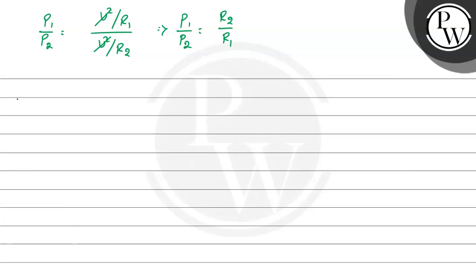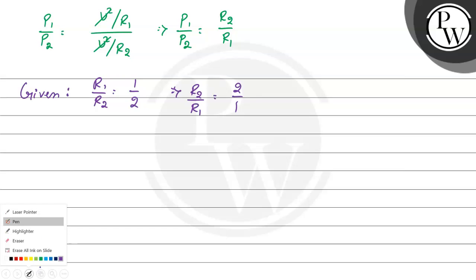Now, according to the given question, we have R1 by R2 is equal to 1 by 2. Here we have P1 by P2 will be equals to R2 by R1.